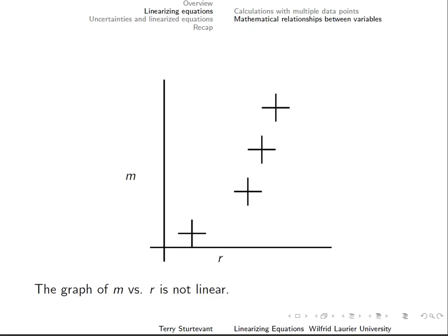Density is given by the mathematical relationship between mass and radius. A graph is a way of showing a mathematical relationship. The graph of mass versus radius isn't linear.